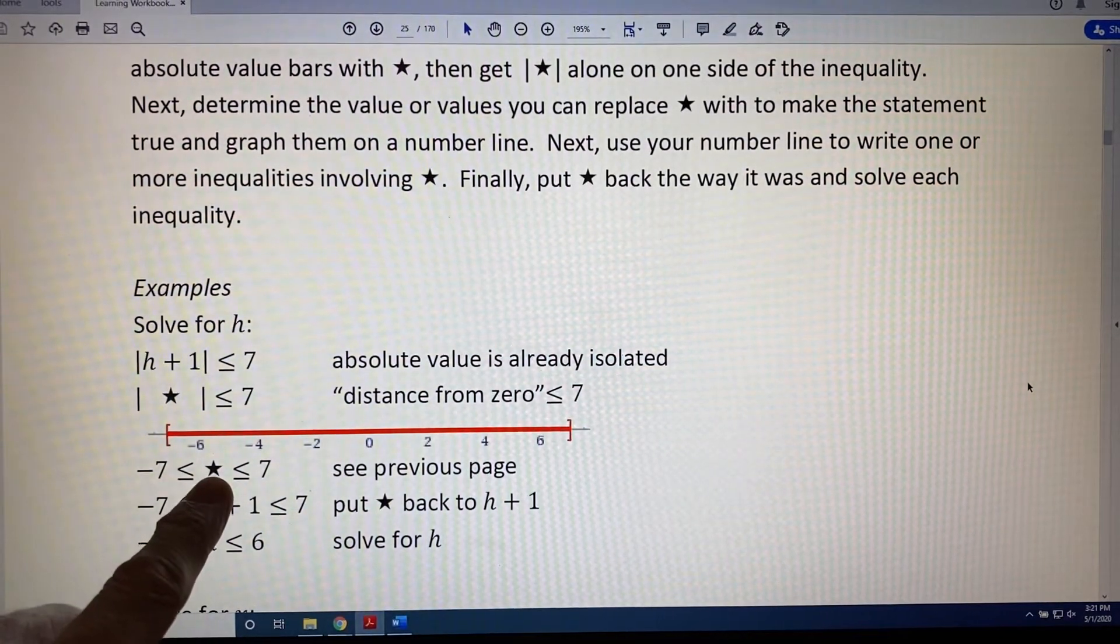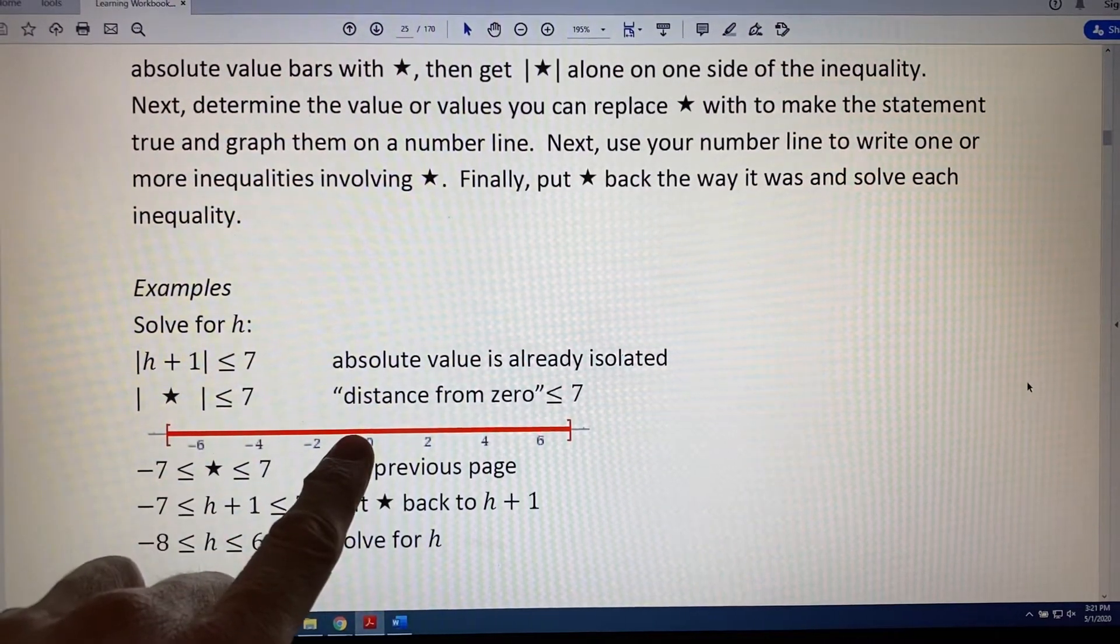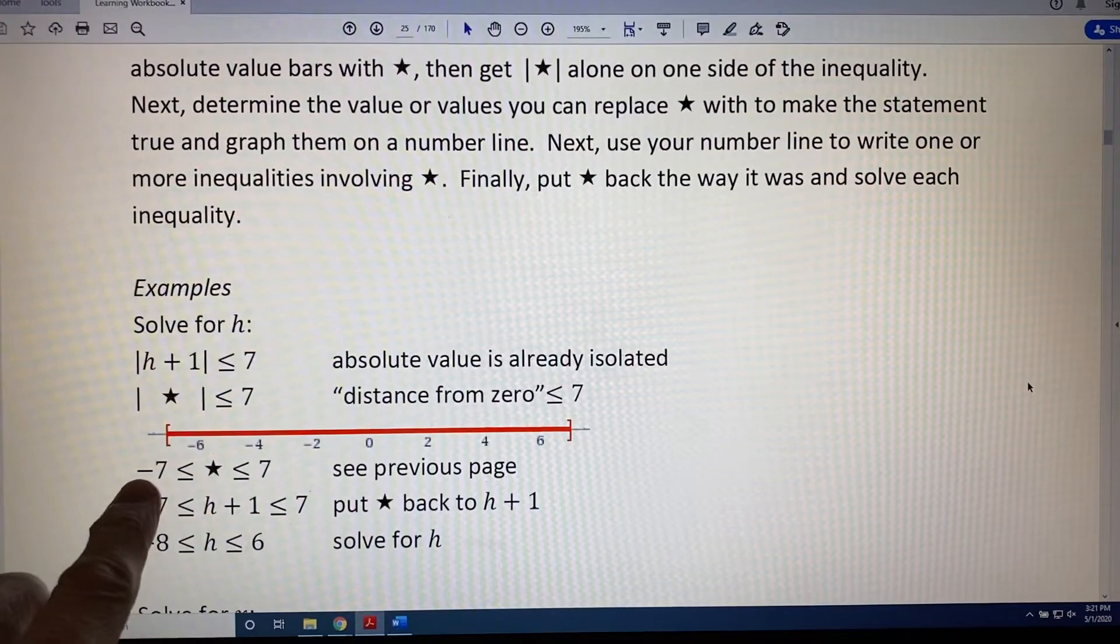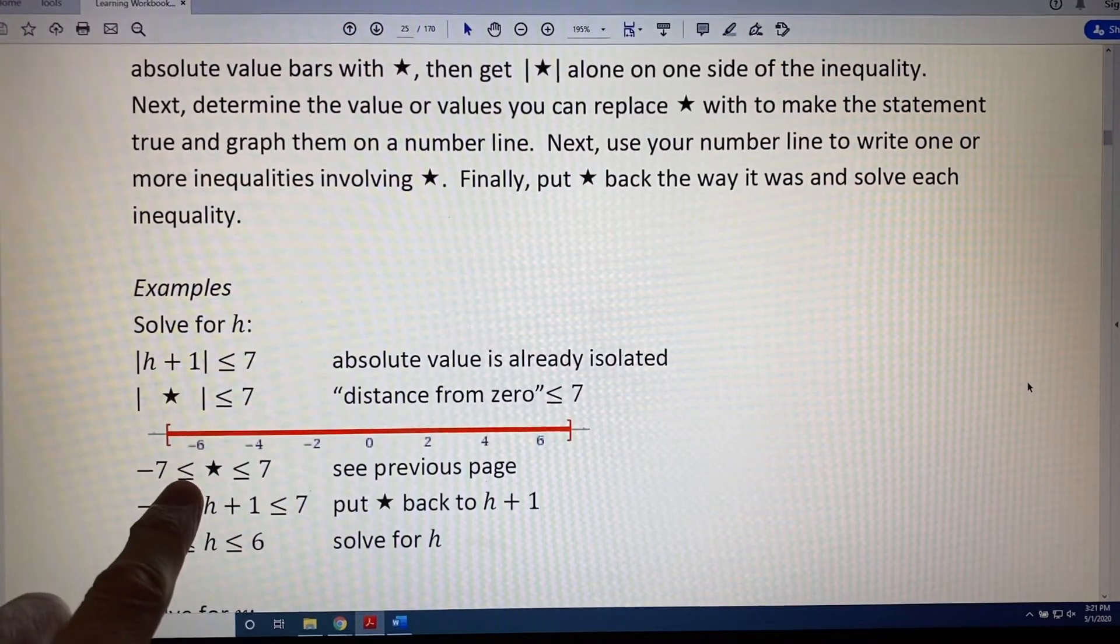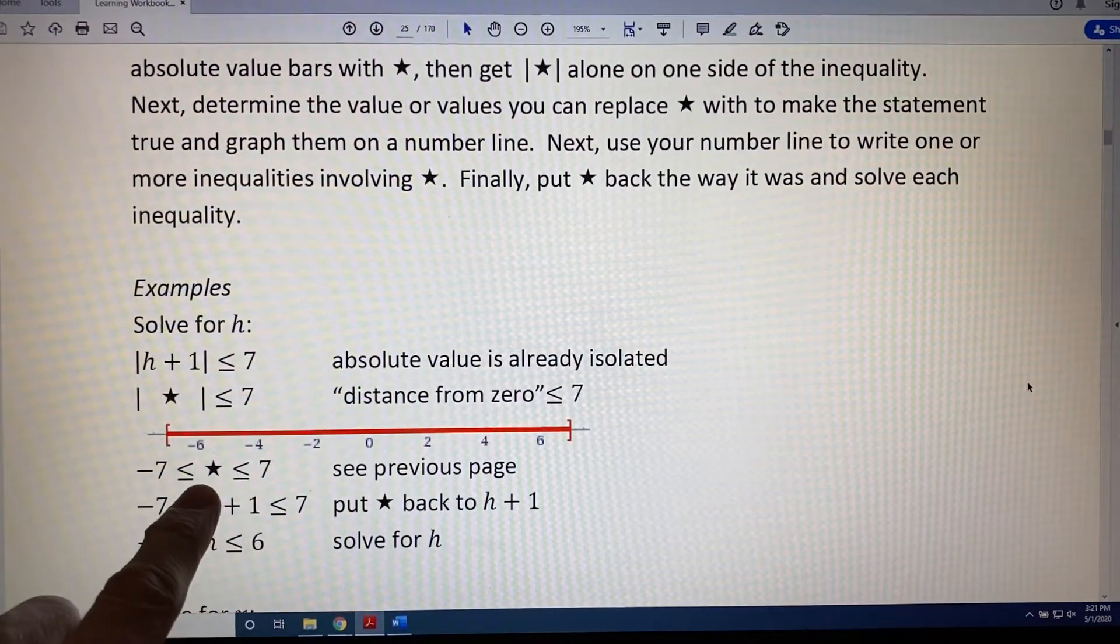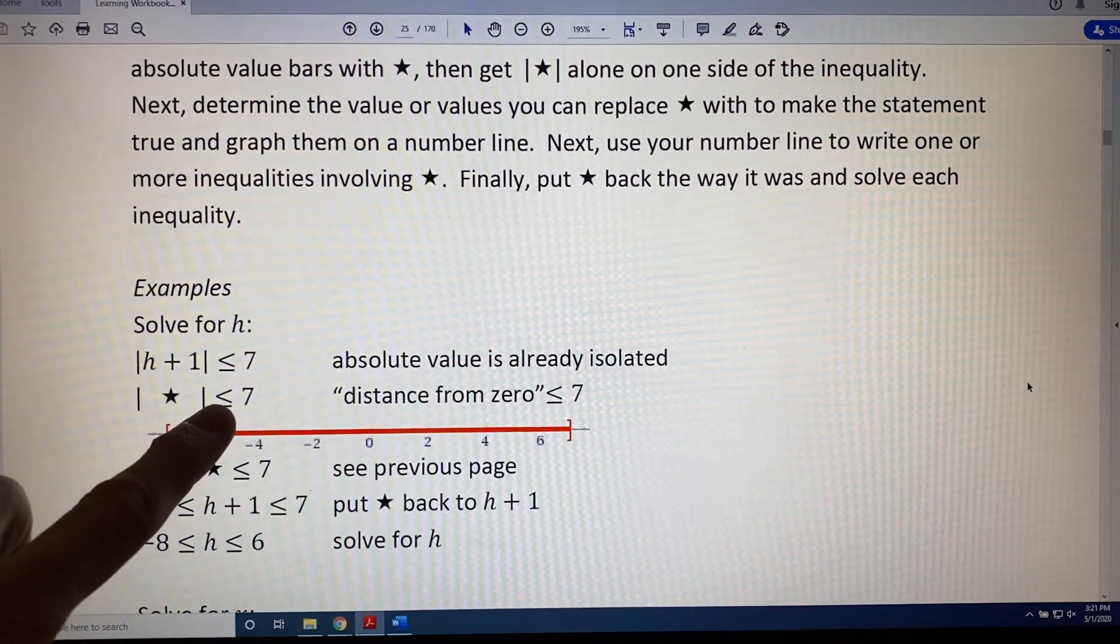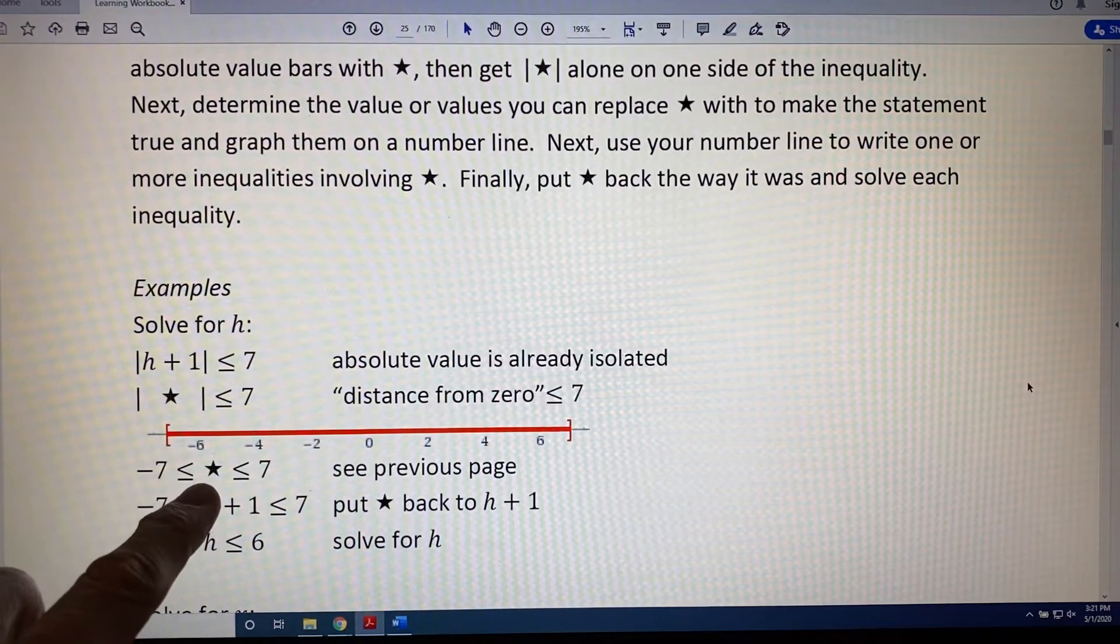Now, using that number line, write an inequality involving star. It's a between-type inequality. So, we put the star in between negative 7 and 7, and we put the less than or equal to symbol, in this case less than or equal to because of the inequality in this problem, in between.